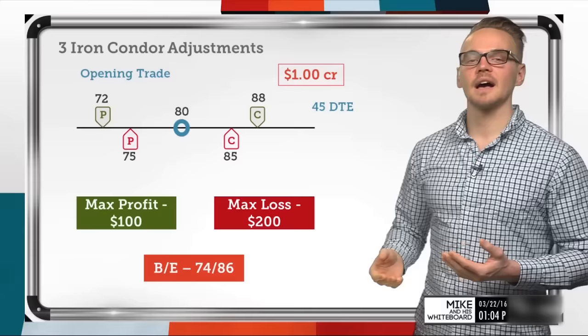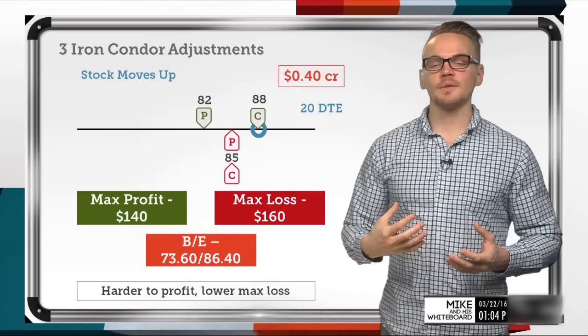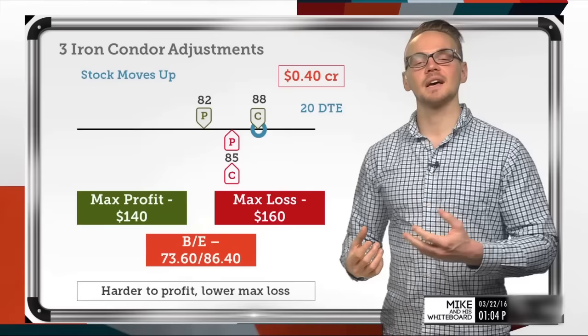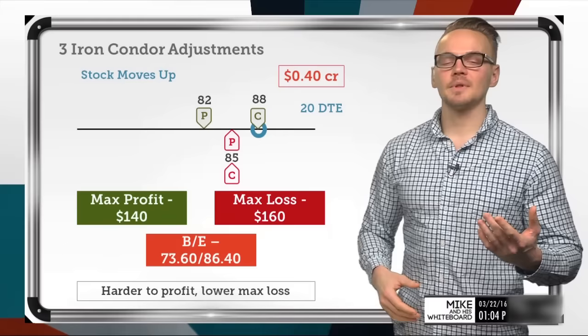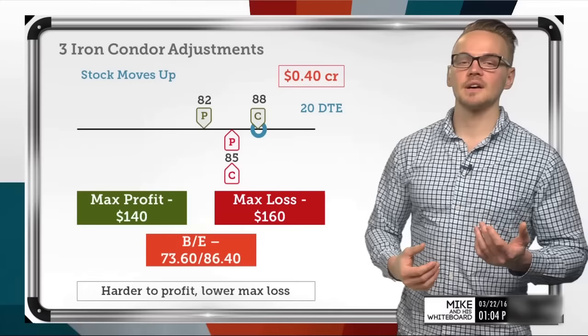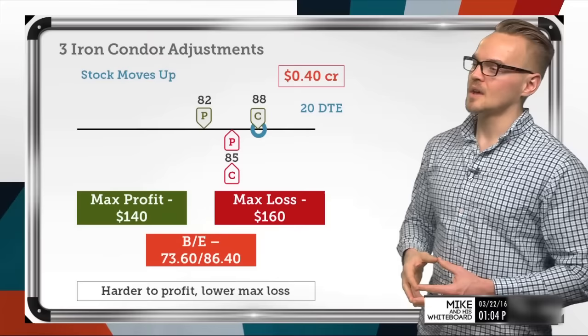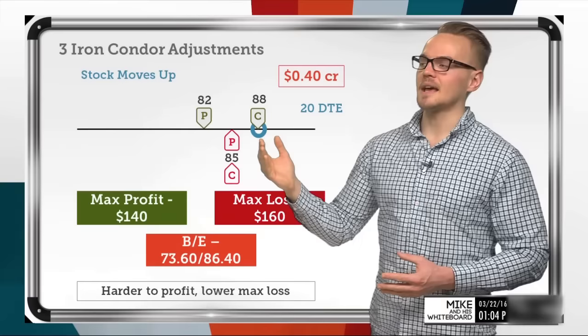If the stock price moves up, the best thing we can do is roll the untested side up. You'll see our studies on this for strangles — the same thing applies to iron condors, we're just dealing with defined risk so we'll collect less credit than with naked options. Let's say 25 days went by and we're left with 20 days on expiration, and the stock price has moved up to our long call strike of 88 — about a 10% move up.